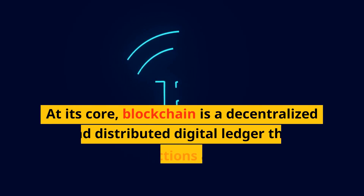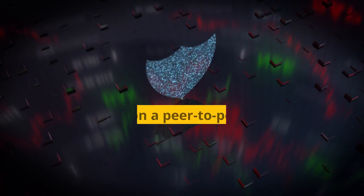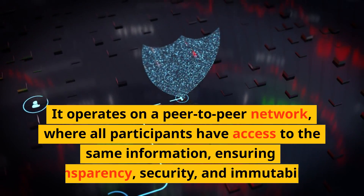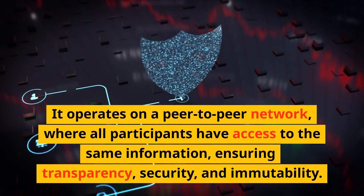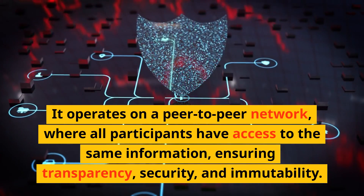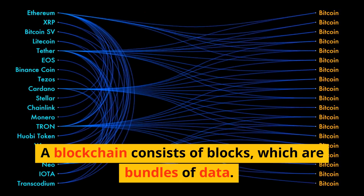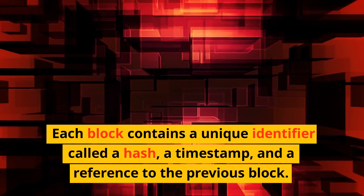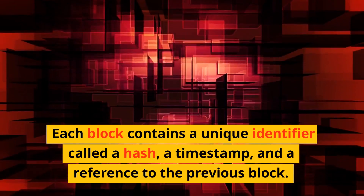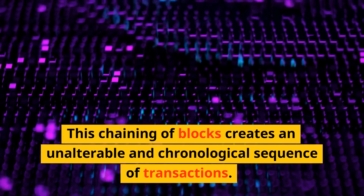At its core, blockchain is a decentralized and distributed digital ledger that records transactions across multiple computers or nodes. It operates on a peer-to-peer network, where all participants have access to the same information, ensuring transparency, security, and immutability. A blockchain consists of blocks, which are bundles of data. Each block contains a unique identifier called a hash, a timestamp, and a reference to the previous block. This chaining of blocks creates an unalterable and chronological sequence of transactions.